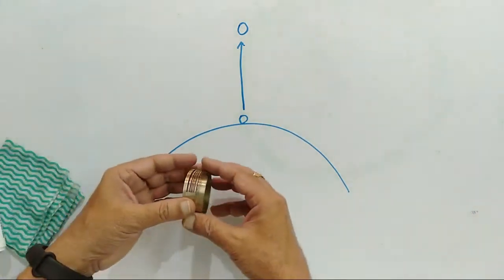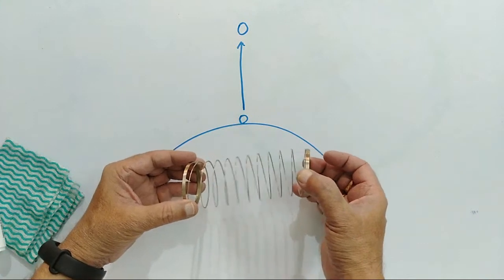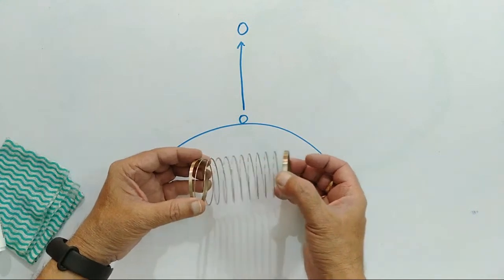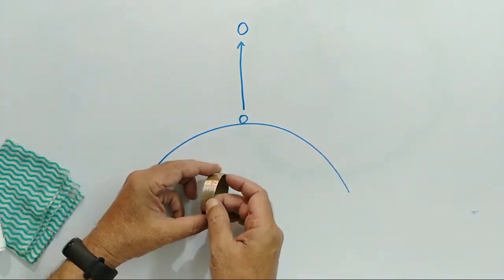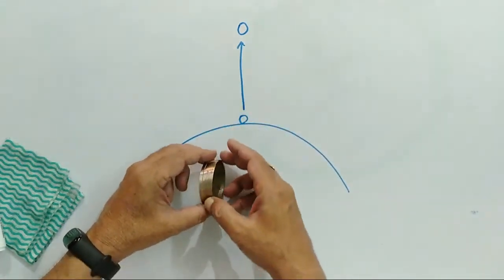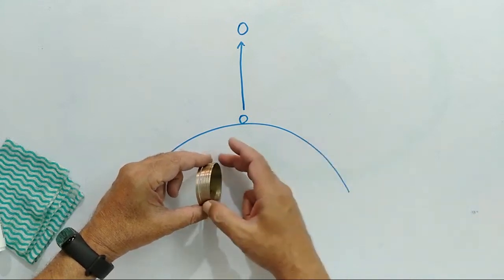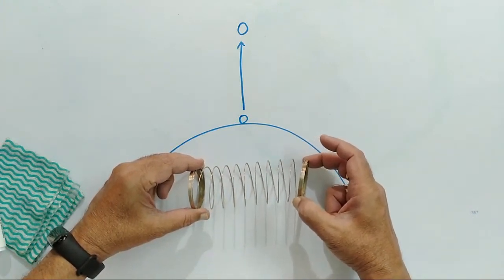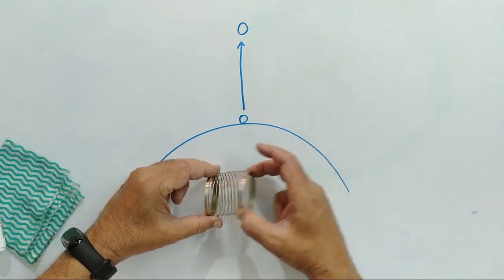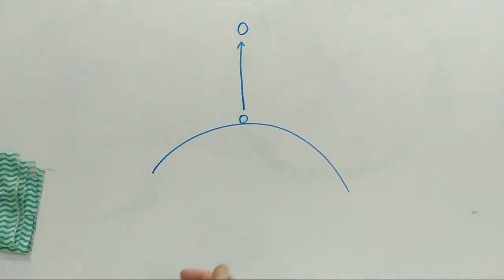Now we are going to discuss a new concept in electrostatics. Suppose this is the earth and if I take any object on the surface and want to take it to a certain height, I have to do some work. When I leave the force, it falls down. When we do some work against gravity, the ball gains potential energy — the work done is stored as potential energy.